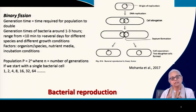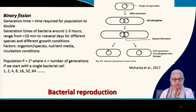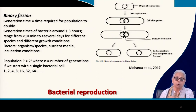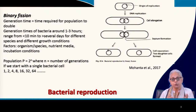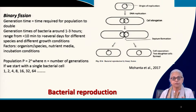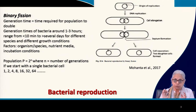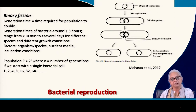The same species under different growth conditions will have a different growth rate. The factors that affect reproduction of bacterial species are: first, the species itself — different organisms have different, species-specific growth rates.